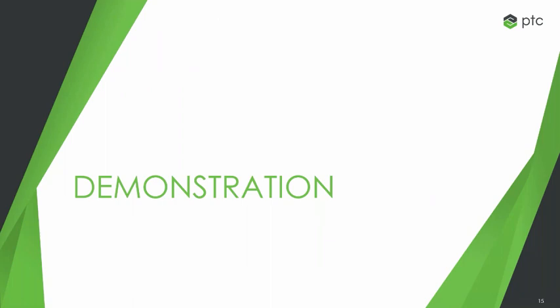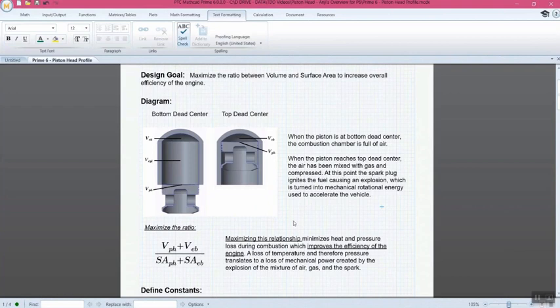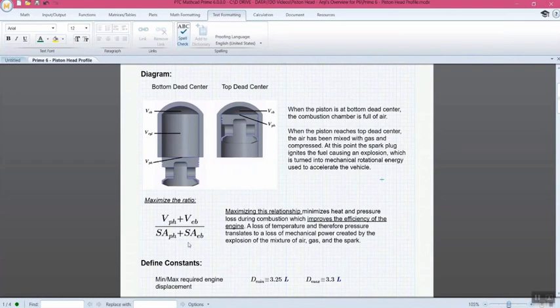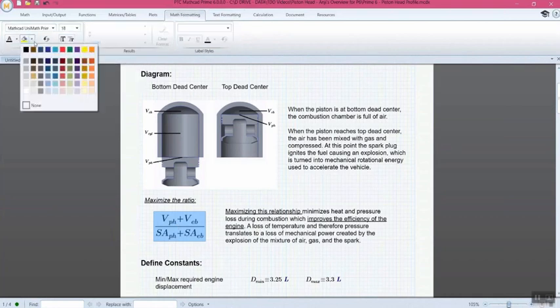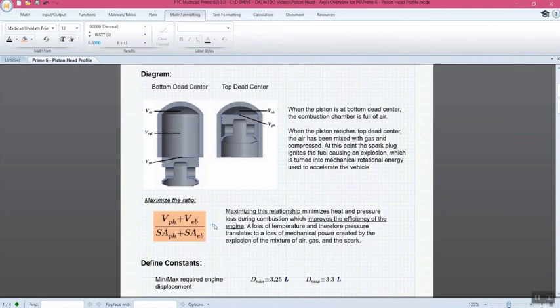What I'd like to move over and do now is show you a little bit of what MathCAD Prime 6.0 looks like going through that flow. All right, so here we have our document that we're going to be working with. And so this is going to be working with the design of a piston that we're working on. And the goal here is to maximize the ratio between volume and surface area to increase the efficiency of this engine. We have that equation that defines this relationship, so we can highlight that equation to make sure that it's emphasized properly. And we also have a description of this equation that we can attach to the right. So anyone who looks at that highlighted term can then see that relationship helps to minimize heat and pressure loss during the process of combustion.